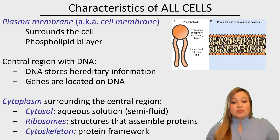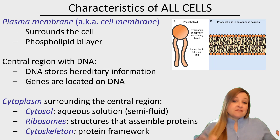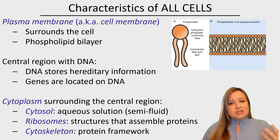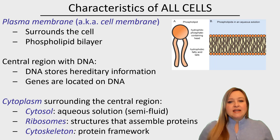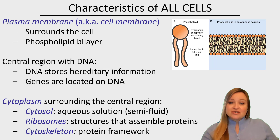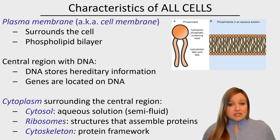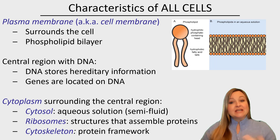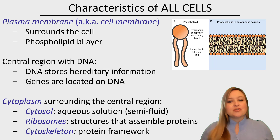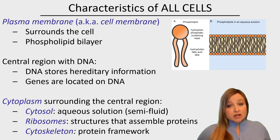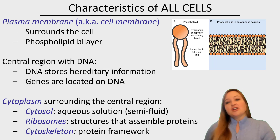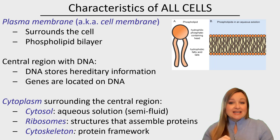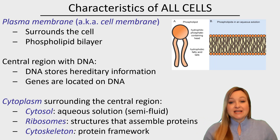The cytoplasm is a term that refers to the cytosol and anything found within the cytosol. The cytosol is the liquid within the cell — a semi-fluid aqueous solution. There also can be structures found within that liquid of the cytoplasm, such as ribosomes. All cells have ribosomes, which are the structures that are going to assemble proteins. And all cells have a cytoskeleton — a framework of proteins that help to give shape to the cells. So regardless of whether cells are prokaryotic or eukaryotic, they're going to have a plasma membrane, DNA inside of it, and a cytoplasm inside of the cell.